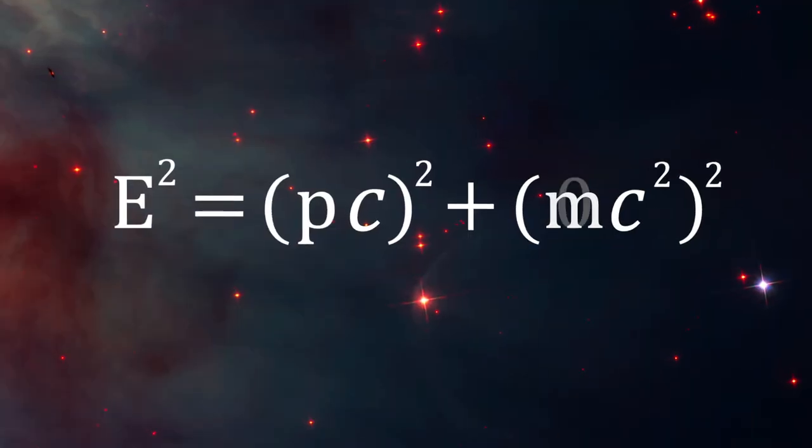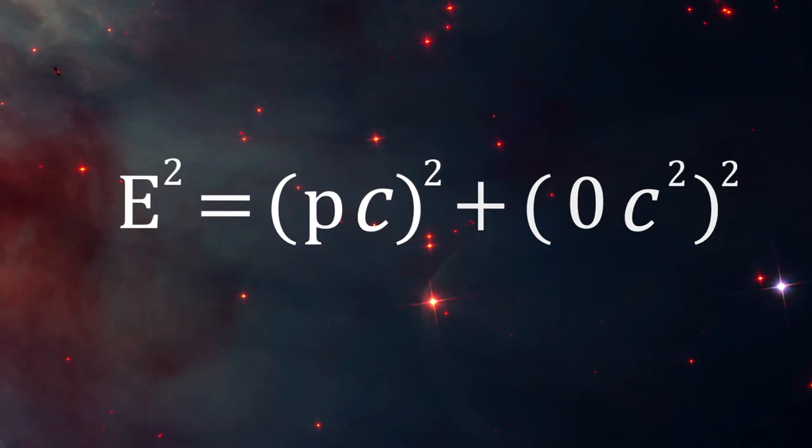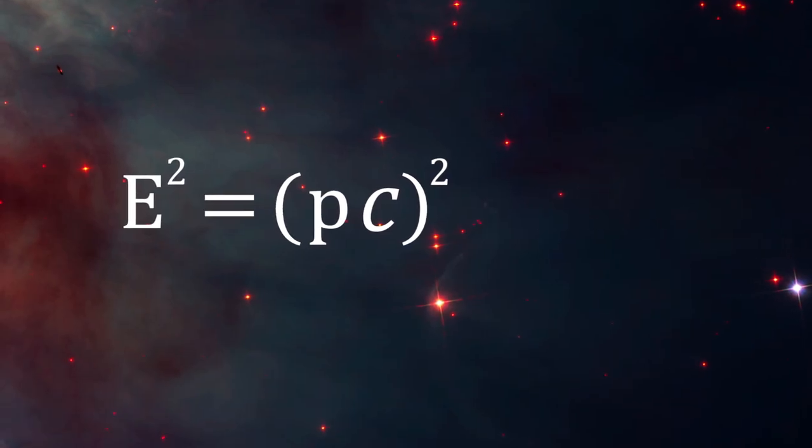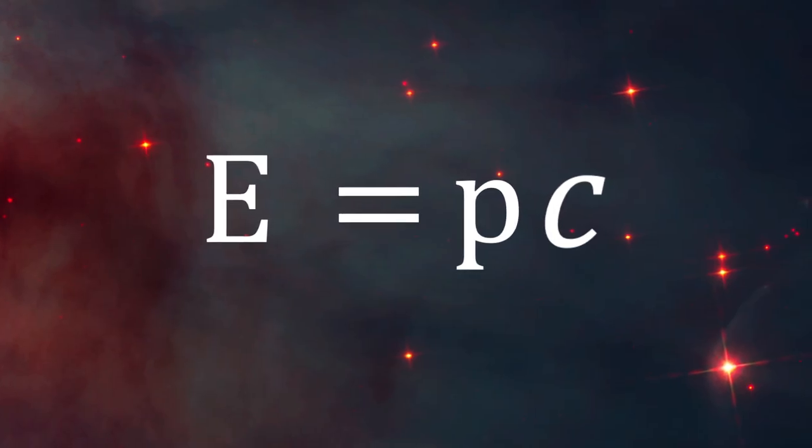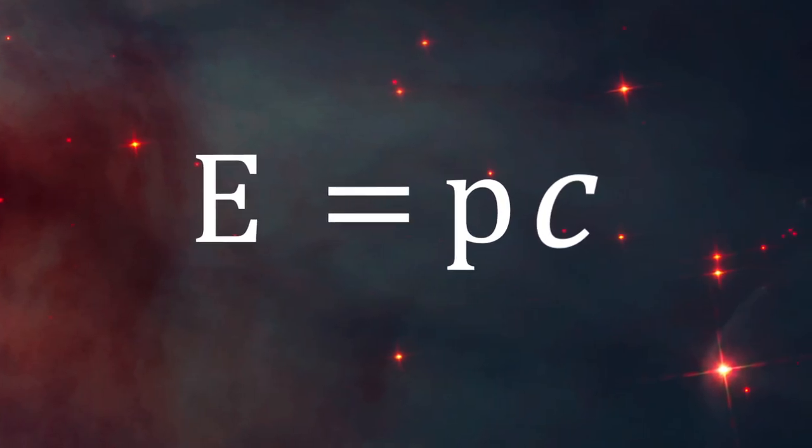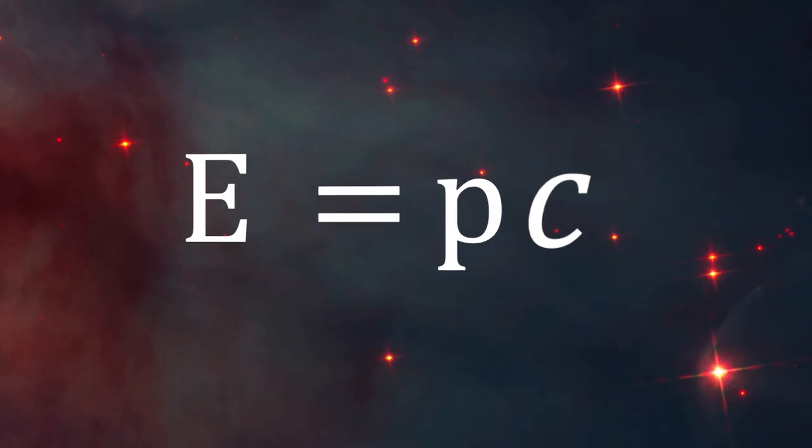Now let's set the mass of a particle to zero, which, of course, describes a photon. We see here that the equation turns into E equals P times C, which is the correct relationship between energy and momentum of a photon. That's pretty snazzy too.